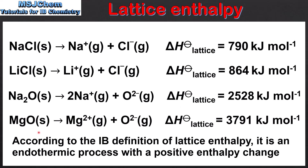The last example is for magnesium oxide, in which 1 mole of solid magnesium oxide breaks down into 1 mole of gaseous magnesium ions and 1 mole of gaseous oxide ions. The lattice enthalpy is 3,791 kJ per mole. If we look at the values of the lattice enthalpies we can see they vary quite considerably, so next we look at the reasons for the differences in the lattice enthalpy of different ionic compounds.